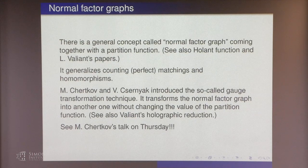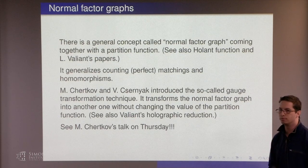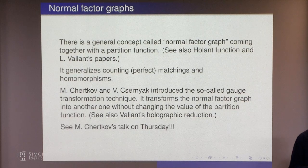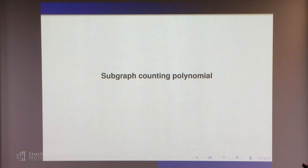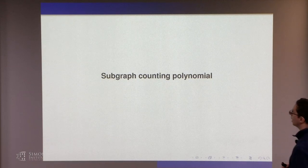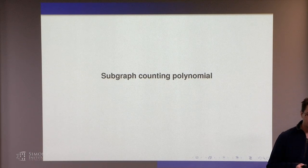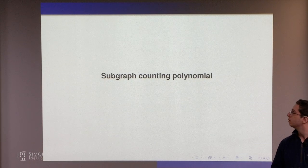This identity is a special case of a much more general family of identities, which can be obtained by the gauge transformation technique. I will not speak about gauge transformation or holographic reduction in detail because Misha will give a talk on Thursday covering it. There is something called the normal factor graph, which generalizes counting perfect matchings, homomorphisms, colorings, and independent sets.